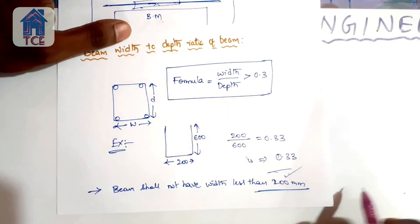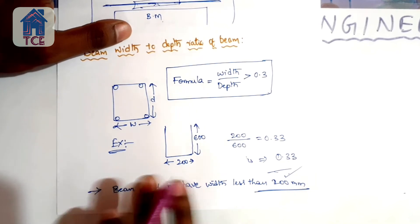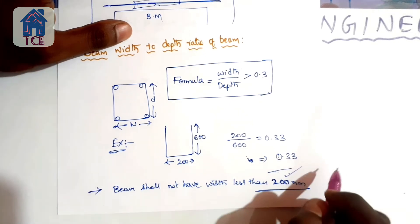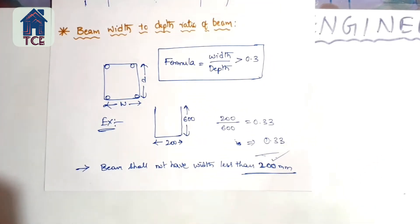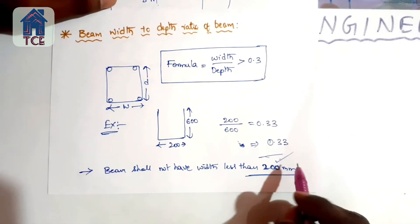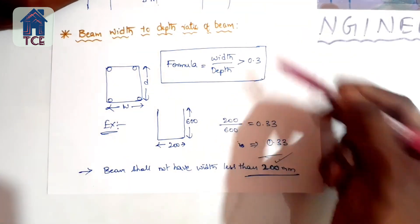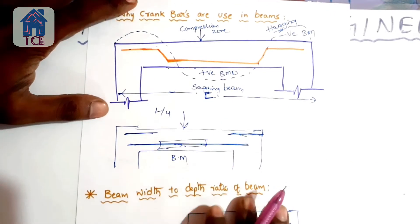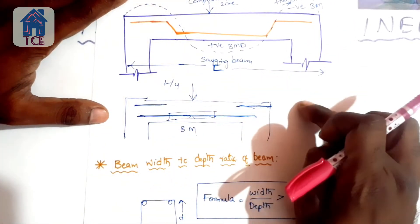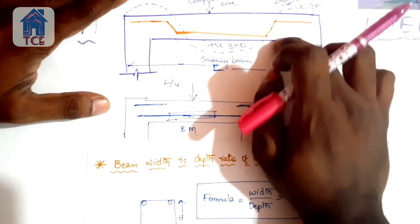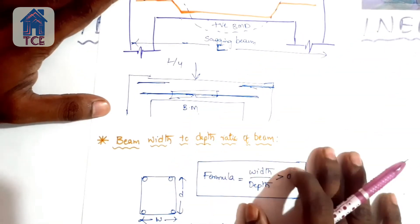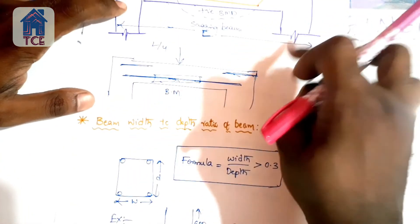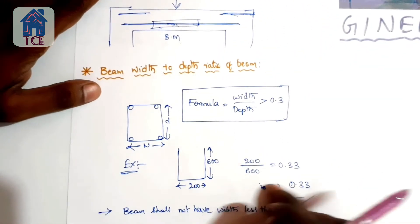The result of 0.33 tells us that the beam width is lower than 200mm relative to depth. Increasing the width increases the strength of the beam. Crank bars are provided to decrease the bending moment and increase the strength of the RCC beam.